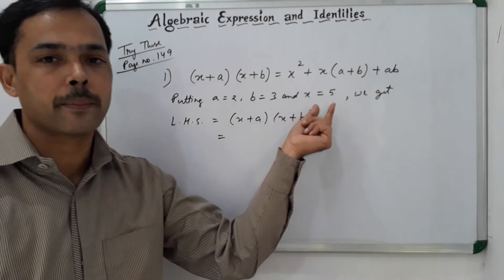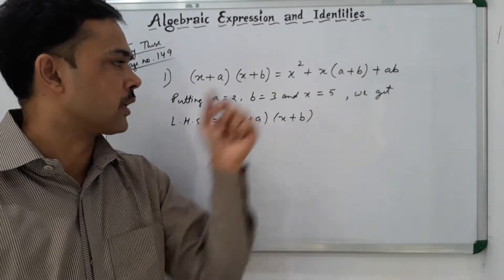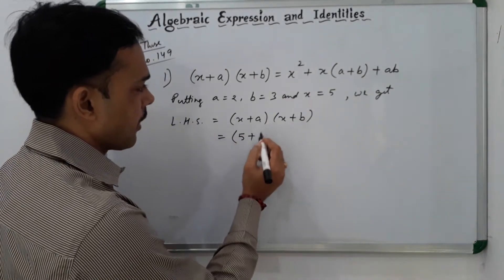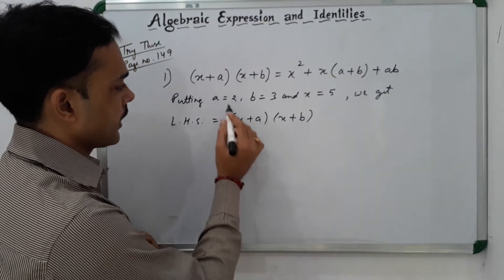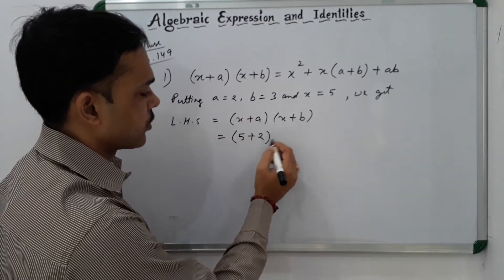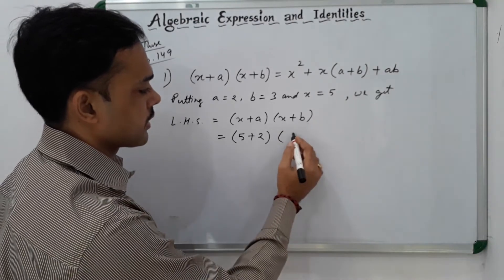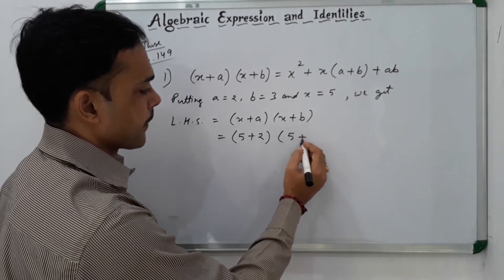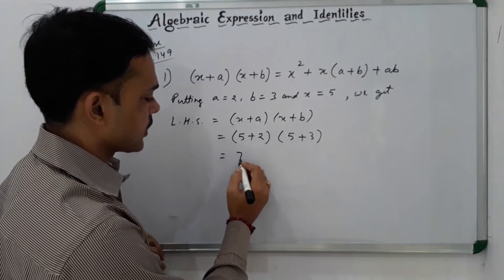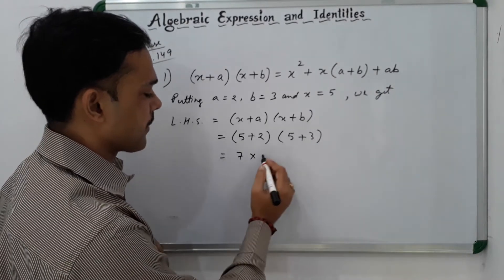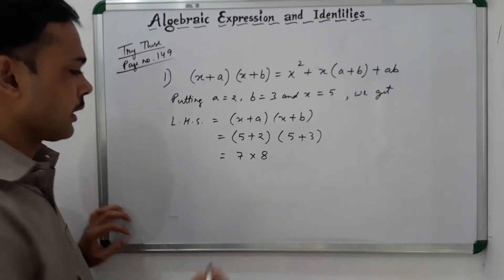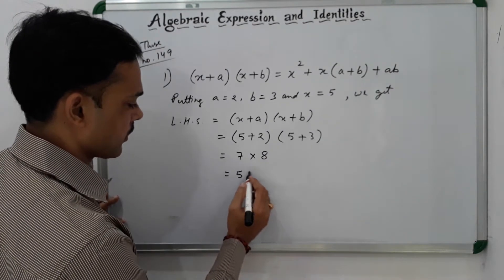The value of X is 5, so at the place of X we write 5. At place of A we write 2, and at place of B we write 3. So we get (5 + 2)(5 + 3), which is 7 × 8, which gives us 56.